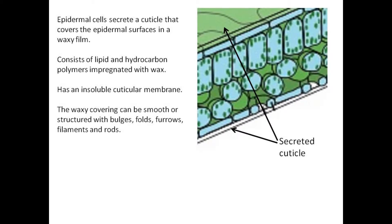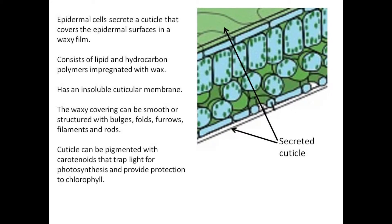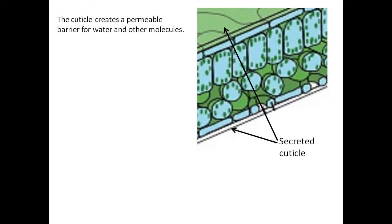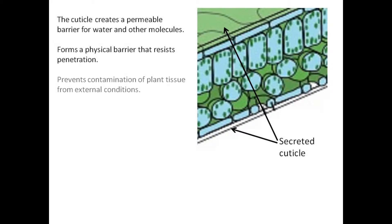The waxy covering can be smooth or structured with bulges, folds, furrows, filaments, and rods. Cuticle can be pigmented with carotenoids that trap light for photosynthesis and provide protection to chlorophyll. The cuticle creates a permeable barrier for water and other molecules, forms a physical barrier that resists penetration, and prevents contamination of plant tissue from external conditions.